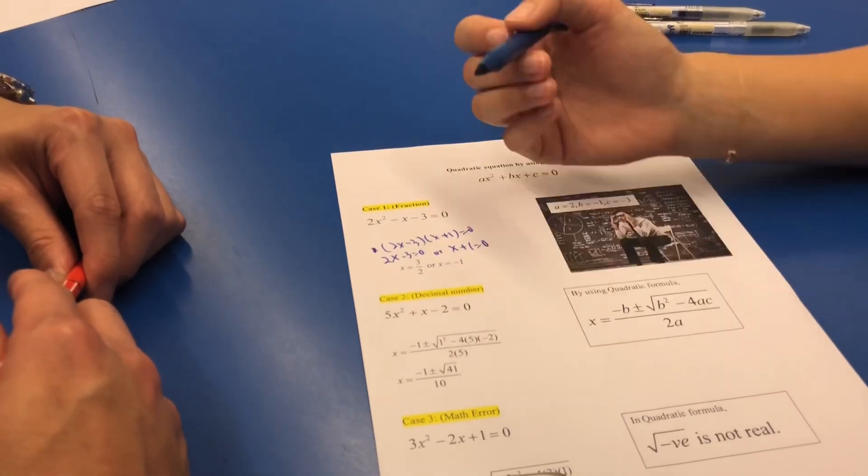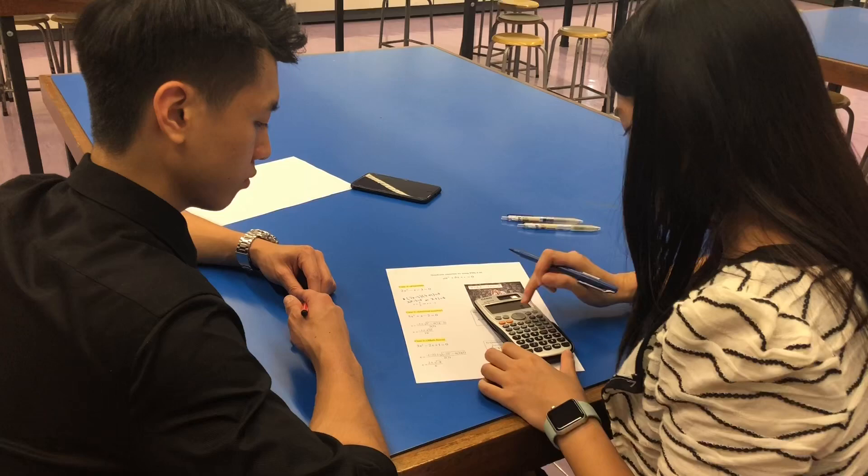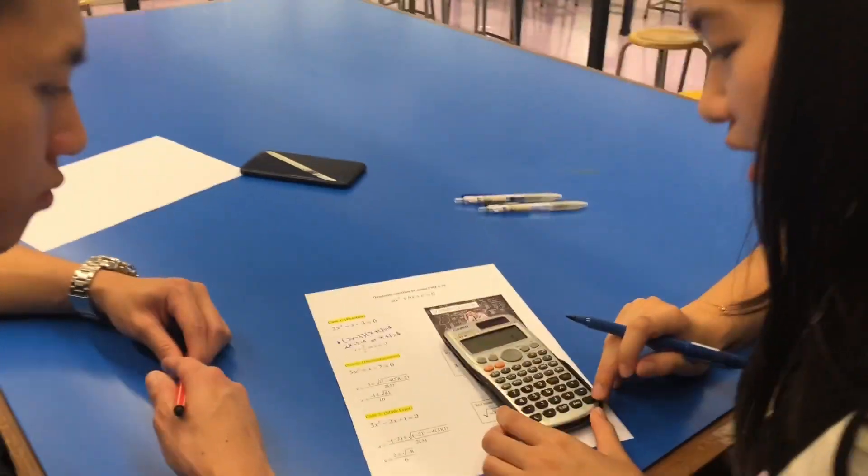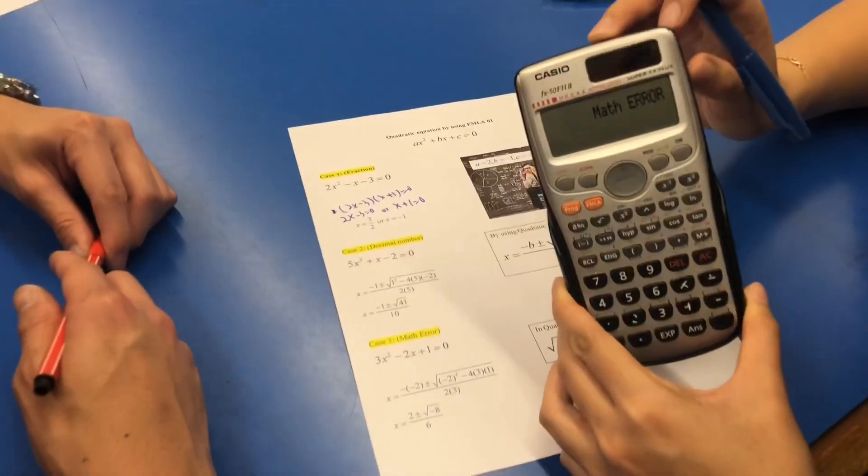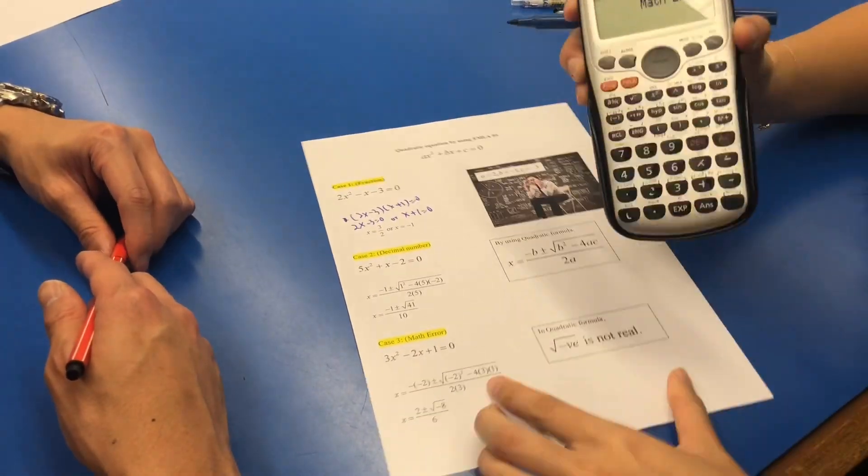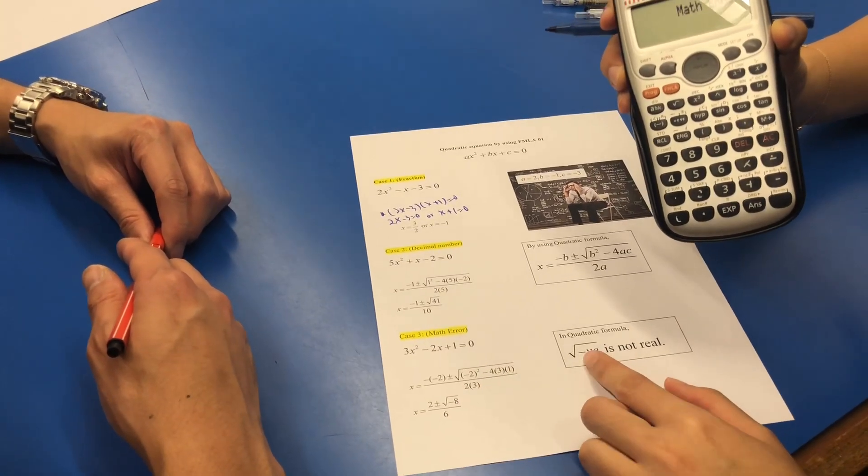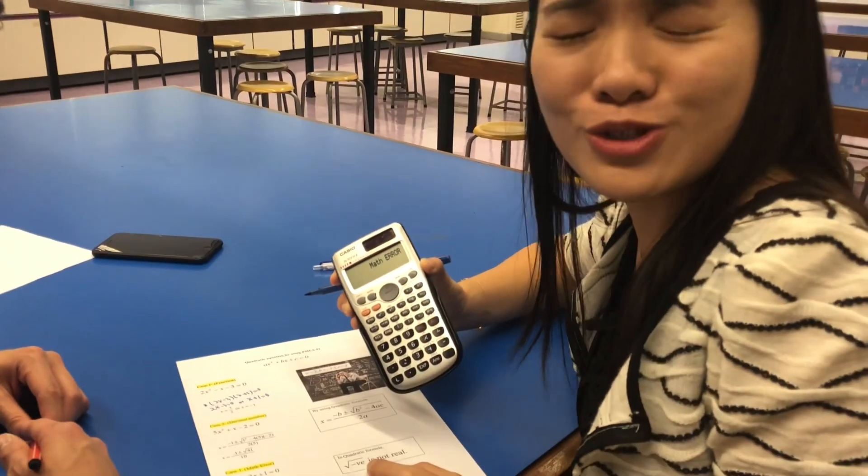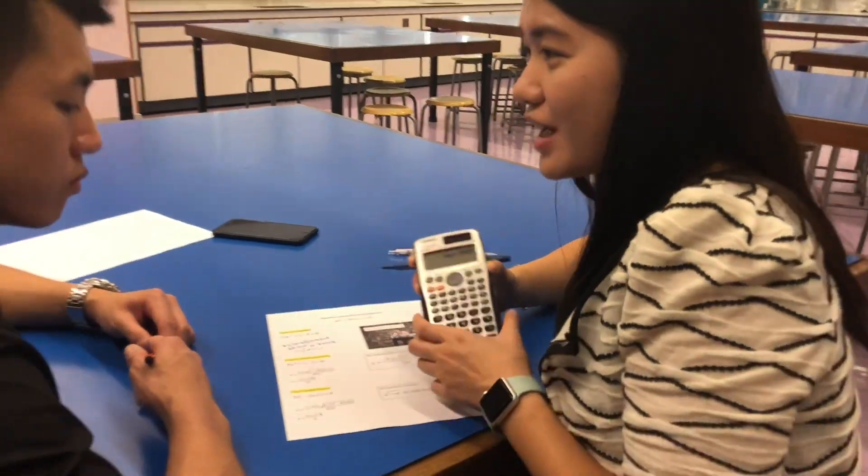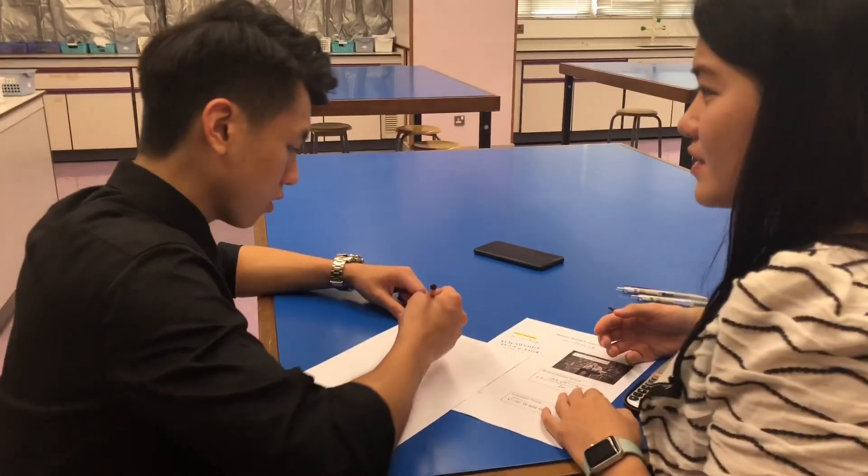The last type is a math error. Formula 0 1, then you input 3, negative 2, and 1. Uh oh, you get a math error. That means inside the square root is a negative number. The square root of a negative number is not real, so there's no real root.